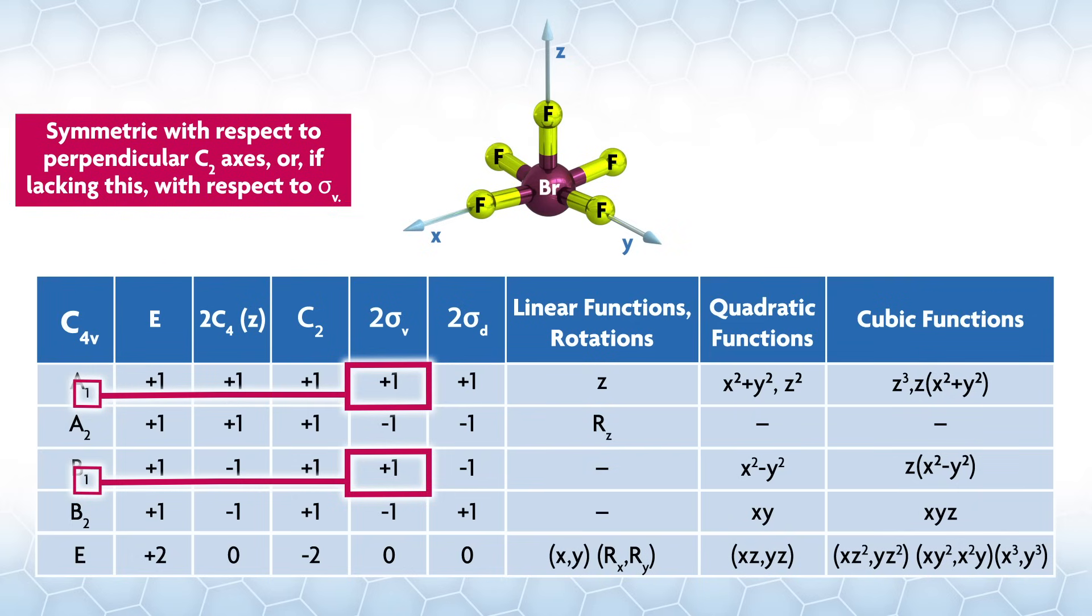Looking at sigma v, we get the representations with a plus one under this operation a subscript 1, and the ones with a negative one a subscript 2. Now all our labels are unique, so we can stop.